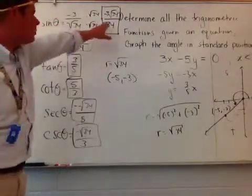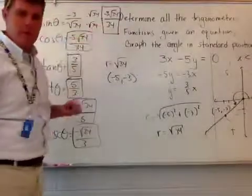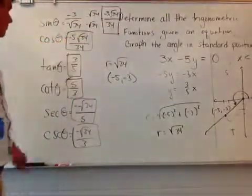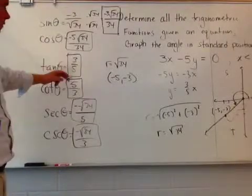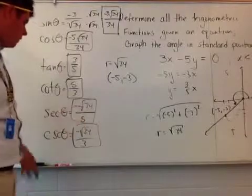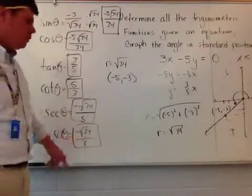But you would normally write sine theta is equal to negative 3 root 34 over 34. Cosine theta is negative 5 root 34 over 34. Tangent theta is 3 over 5. Cotangent, 5 over 3. Secant, negative root 34 over 5. Cosecant theta, negative root 34 over 3. And again, I got all of that information by simply plotting my point.